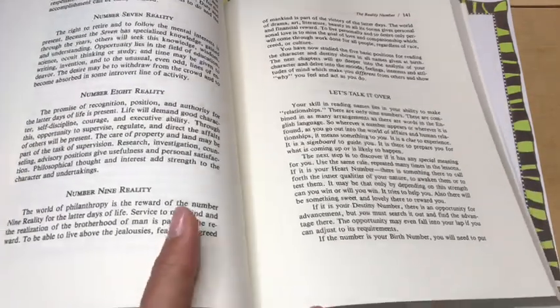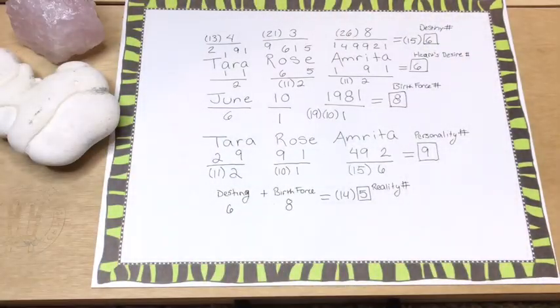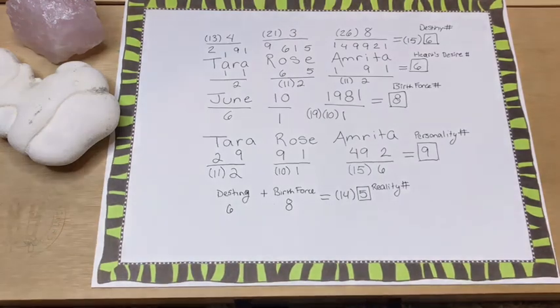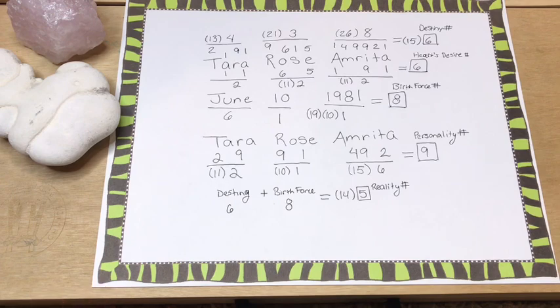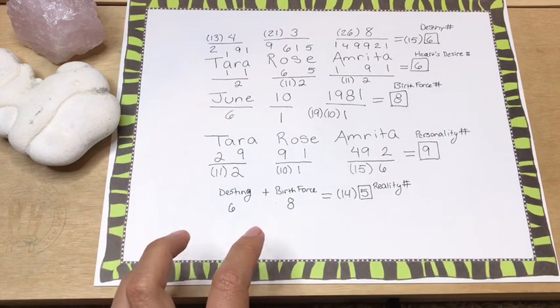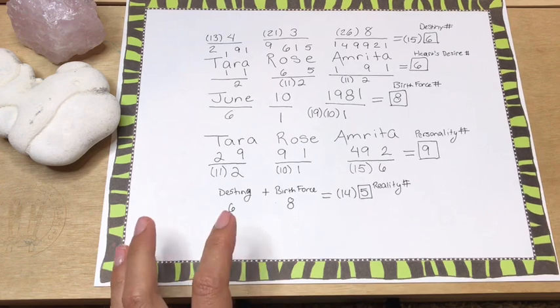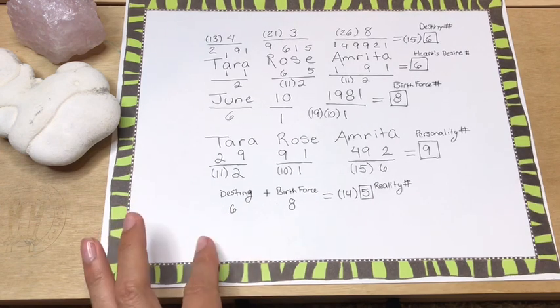We have a number eight reality, the promise of recognition, position, and authority for the latter days of life is present. Life will demand good character, self-discipline, courage, and executive ability. And then we get to the last number, which is a nine reality. The world of philanthropy is the reward of the number nine reality for the latter days of life service to mankind and the realization of the brotherhood of man is part of the reward.